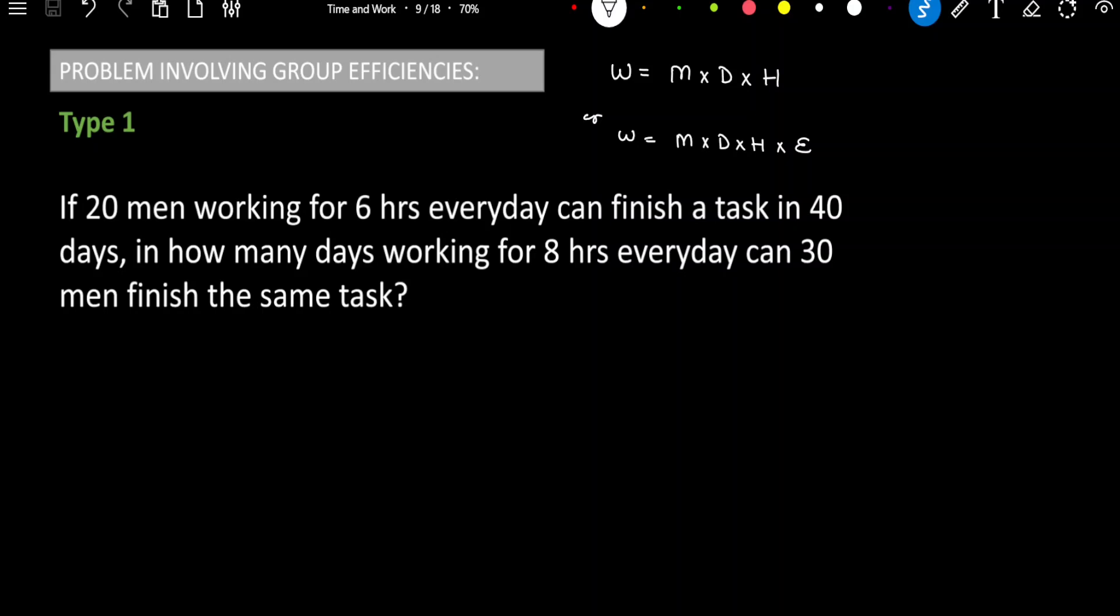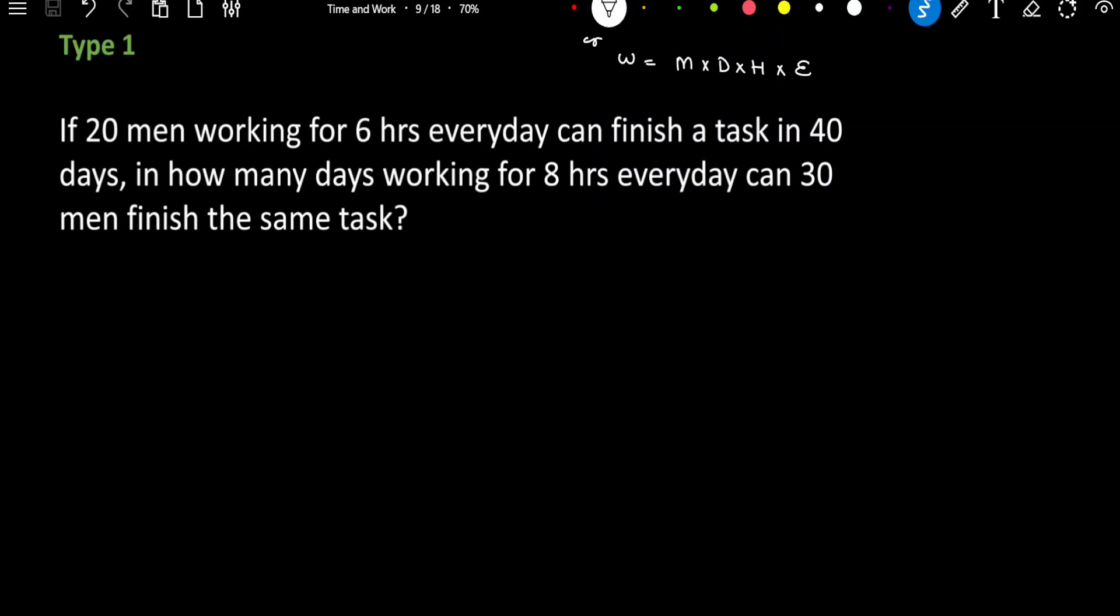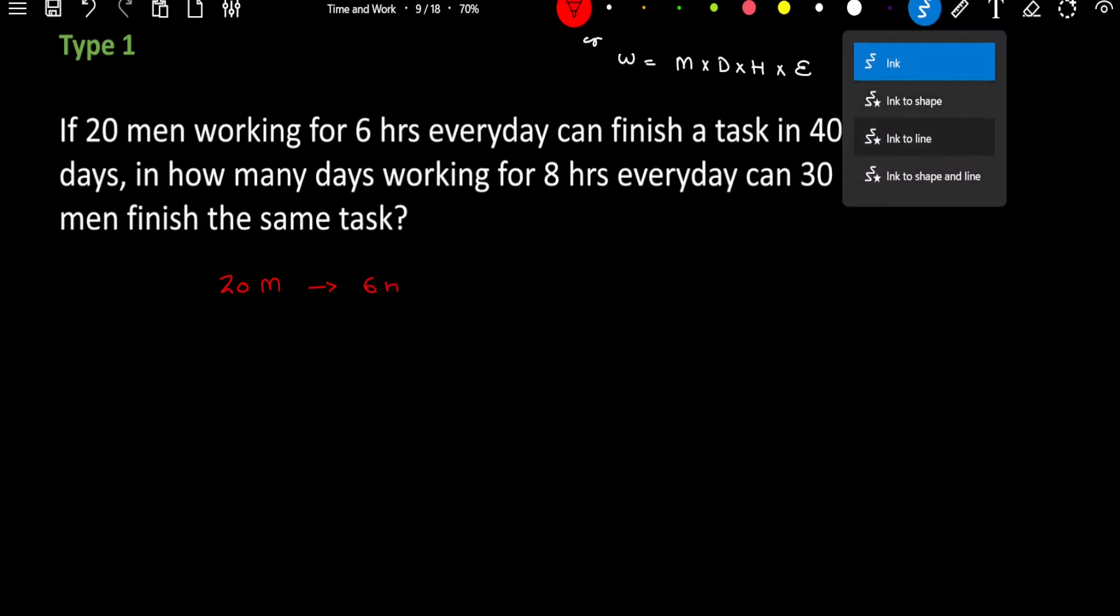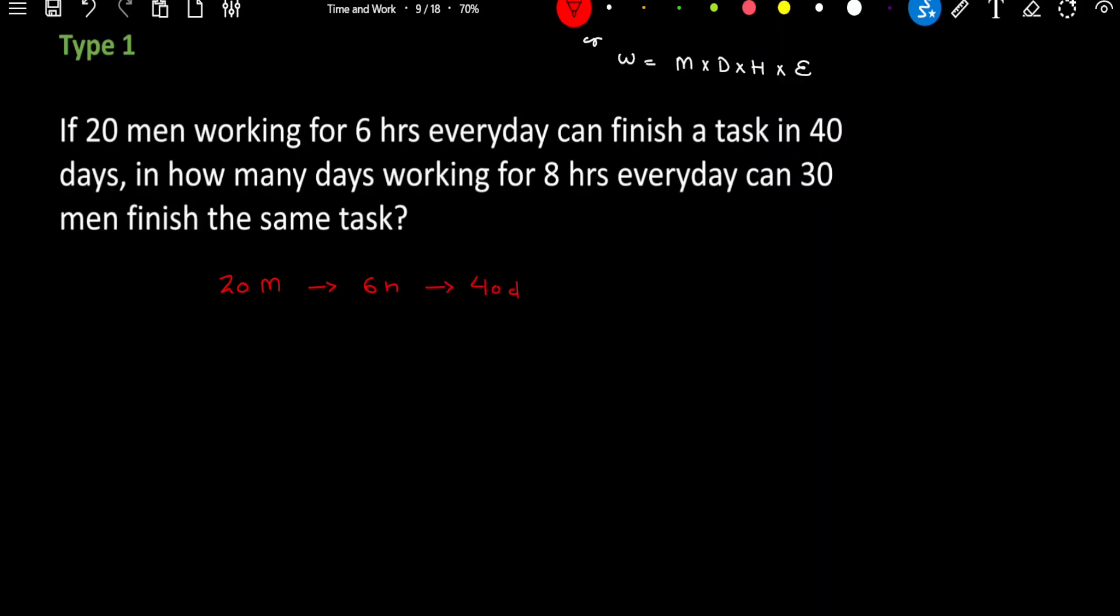Let's start with the first problem. If 20 men working for 6 hours every day can finish a task in 40 days, in how many days working for 8 hours every day can 30 men finish the same task? So if you see the situation carefully, in the first case, the number of men are 20. So there were 20 men and they were working for 6 hours every day such that they are able to complete a task in 40 days. So in 40 days, they have completed a task. Let's call that work as T or the task as T.